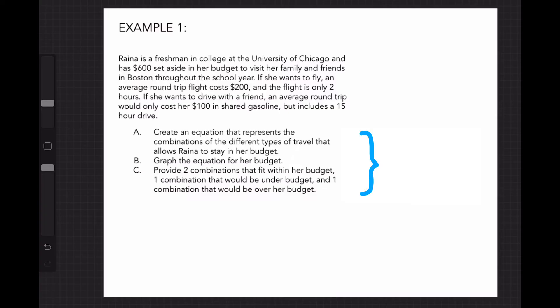Part A: create an equation that represents the combinations of the different types of travel that allows Raina to stay in her budget. Part B: graph the equation for her budget. Part C: provide two combinations that fit within her budget, one combination that would be under budget and one combination that would be over her budget.